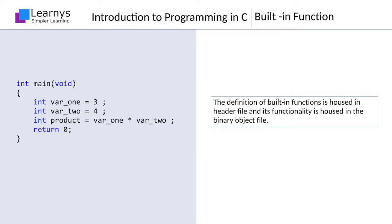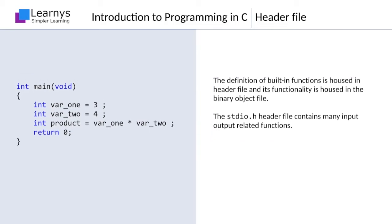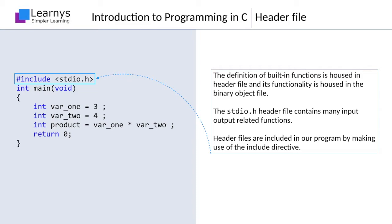In order to make use of a particular function, you need to include the relevant header file in your program file. The name of the function that provides the functionality of printing on terminal is printf, and the relevant header file is stdio.h. This header file contains many other input-output related functions which we will see later. In order to make use of the printf function, we need to include the stdio.h file in our program. The inclusion of a file is done by making use of the include directive. The very first line of this program includes the stdio.h file in our program.